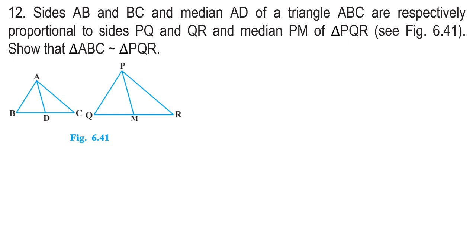Okay, now we'll see what's given. Given that AB is proportional to PQ, BC to QR, and AD to PM. Then AB by PQ is equal to BC by QR is equal to AD by PM. That's equation number 1.